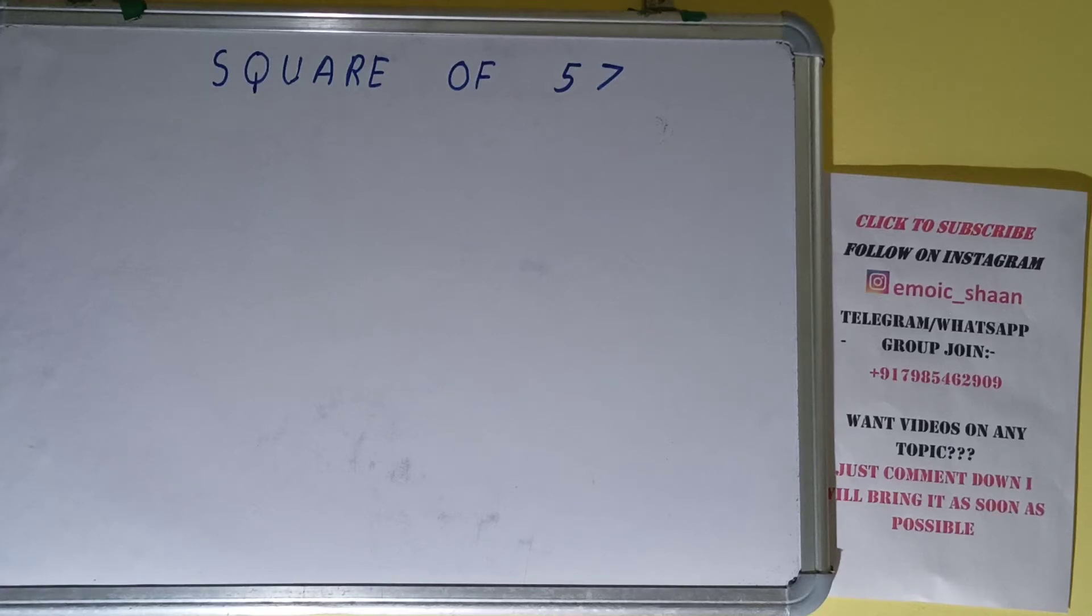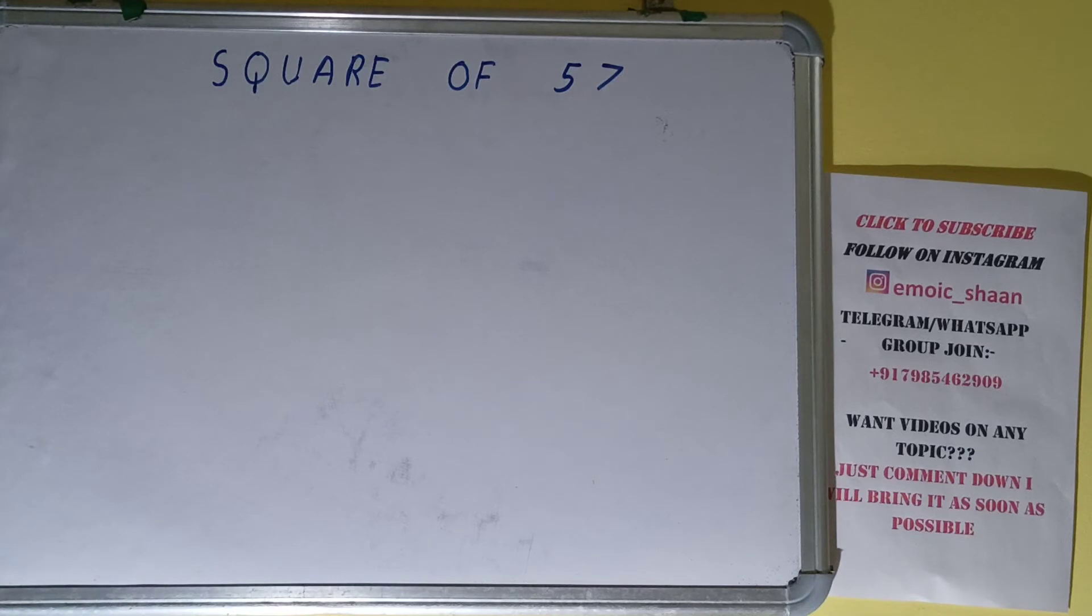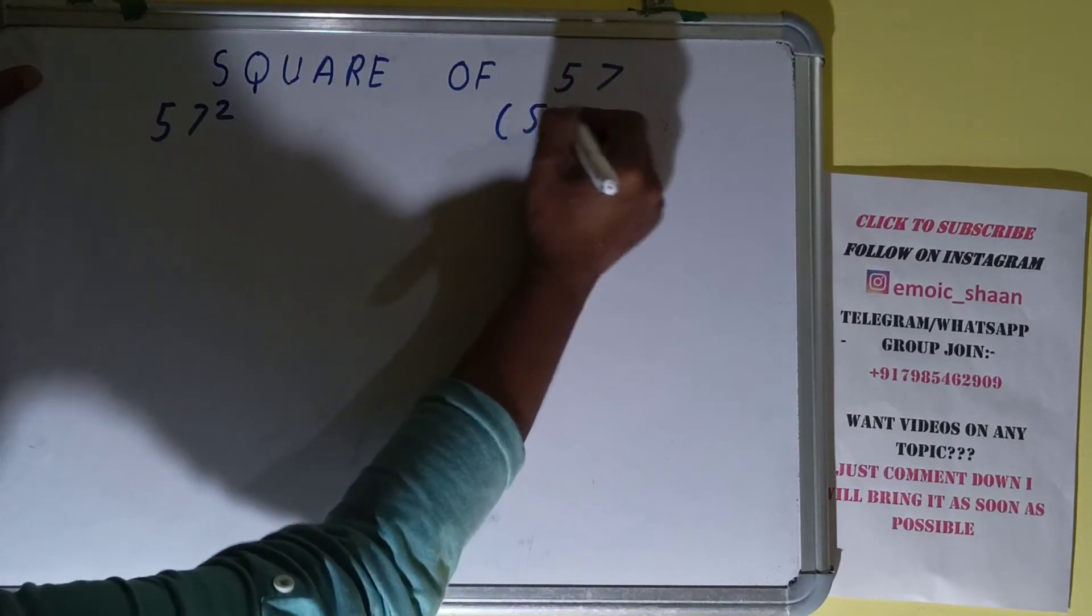Hello friends, and in this video I will be helping you with the square of the number 57. So let's start. Square of 57 can also be written as 57 to the power 2, or inside bracket 57.